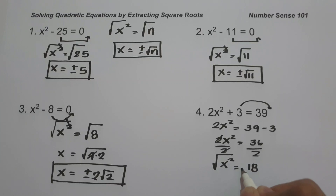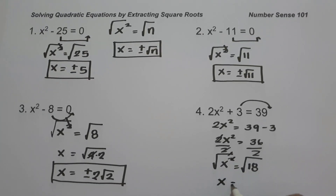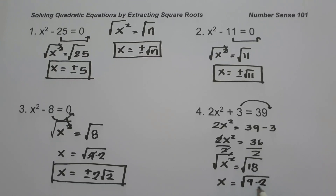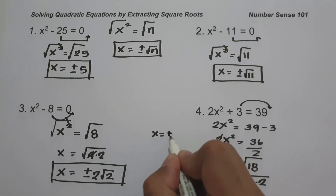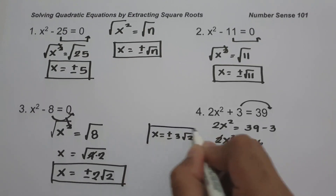So let us take the square root of both sides. x is the square root of 18. We find two numbers that multiply to 18 where one is a perfect square: that is 9 and 2, since 9 times 2 is 18 and 9 is a perfect square. Therefore, the value of x is the square root of 9 — positive and negative 3 — times the square root of 2, and this will be our answer.